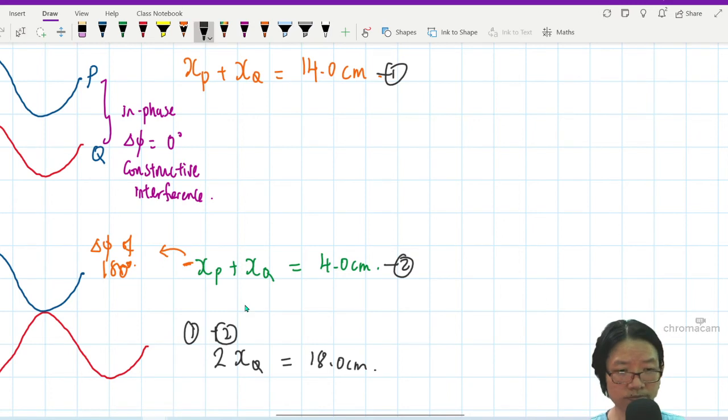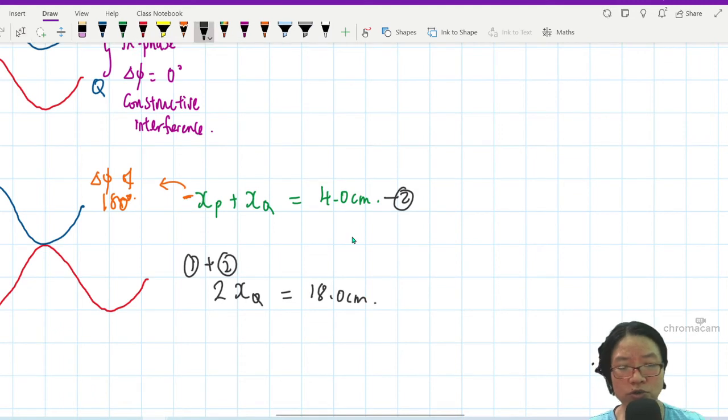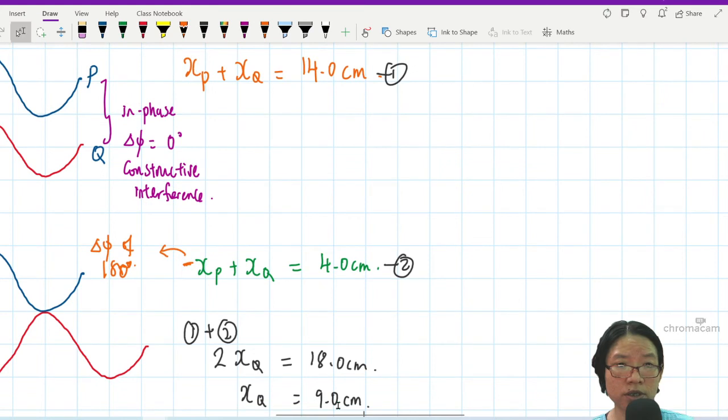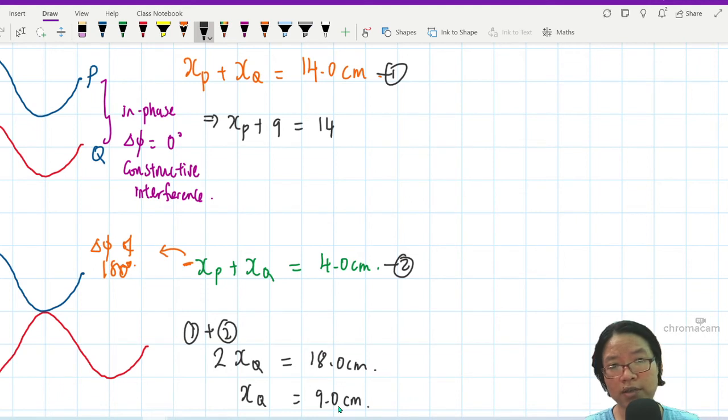xq plus xq is 2 xq. 14 plus 4 is 18. So this will be 18 cm. So we are solving a system of simultaneous equation I take equation 1 plus equation 2. So the xp will cancel each other. You have no more xp. And then you have xq plus xq and you have 2 xq. So now you have the amplitude of Q. It is 9.0 cm. Now we can just substitute into any one of this equation. So from here xp plus 9 is equal to 14. So xp will now be equal to 5 cm. So 1 of the wave is 9 cm. The other wave is 5.